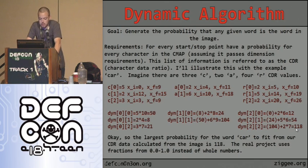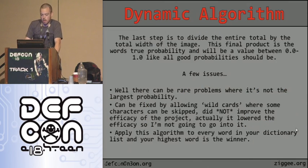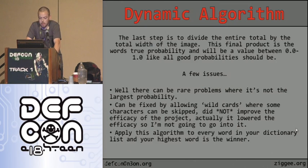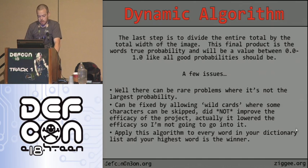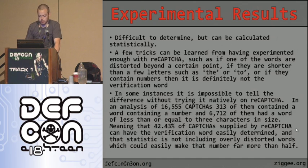The largest probability for the word 'car' from the CDR data is 118. The real project uses fractions from 0 to 1 instead of whole numbers. The last step is to divide the entire total by the total width of the image, giving the word's true probability between 0 and 1. There can be rare cases where it's not the largest probability, fixable with wildcards, but that didn't improve the algorithm. You apply this to every word in the dictionary list and the highest probability word is the winner.